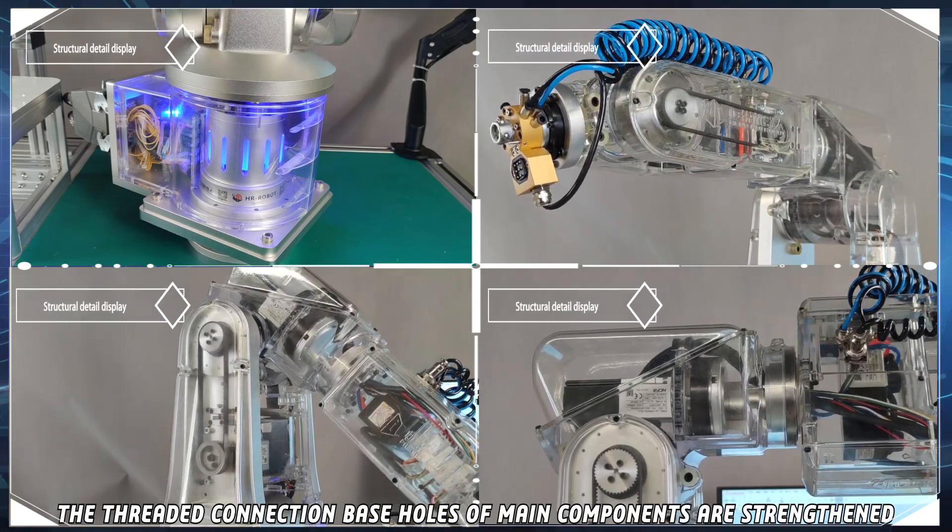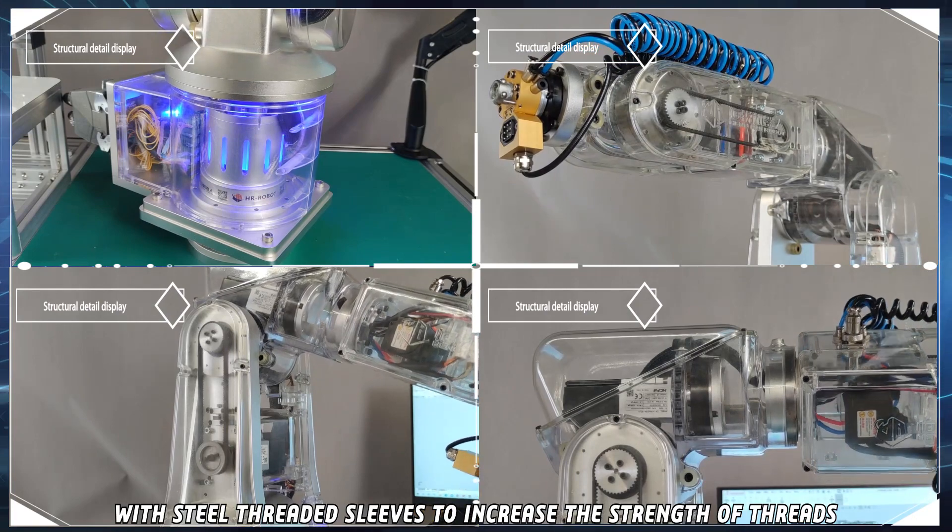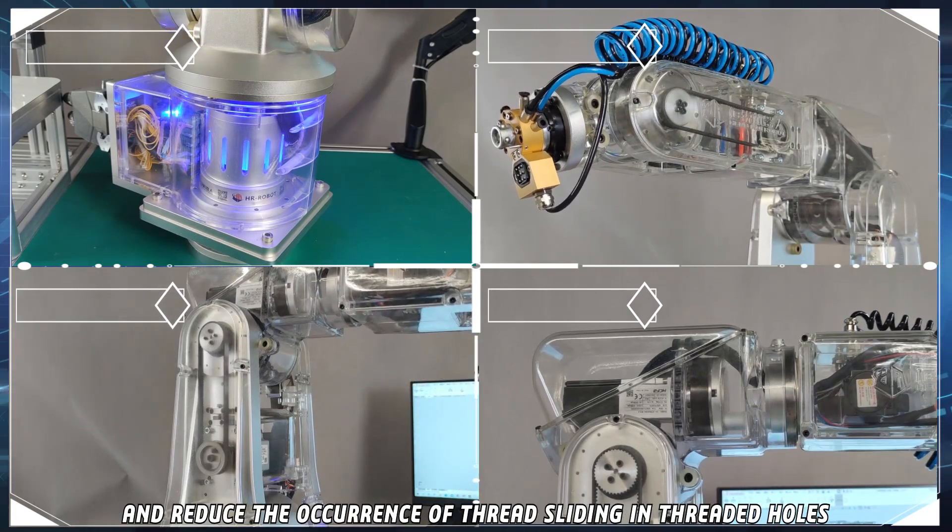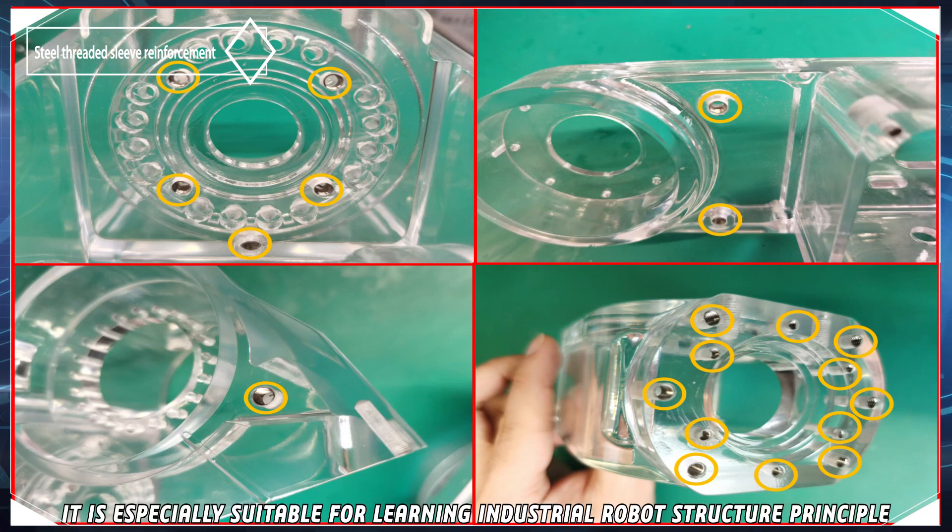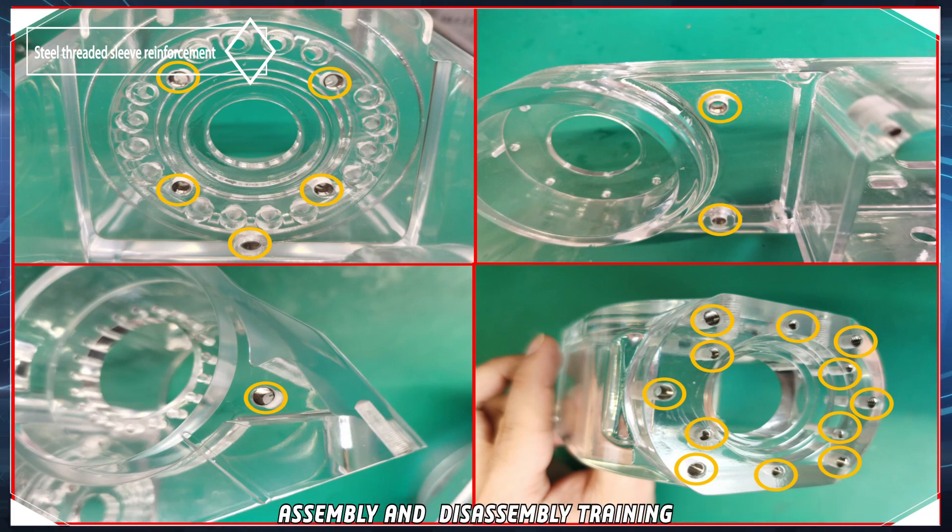The threaded connection base holes of main components are strengthened with steel threaded sleeves to increase the strength of threads and reduce the occurrence of thread sliding in threaded holes during repeated disassembly and assembly. It is especially suitable for learning industrial robot structure principle, assembly, and disassembly training.